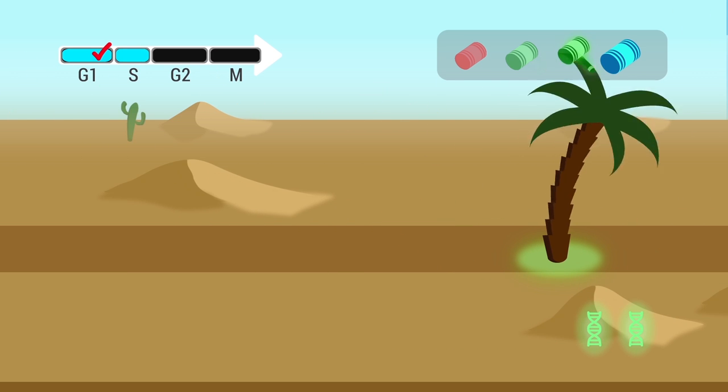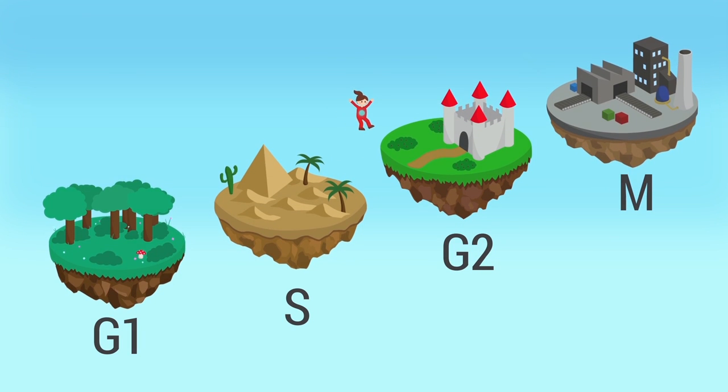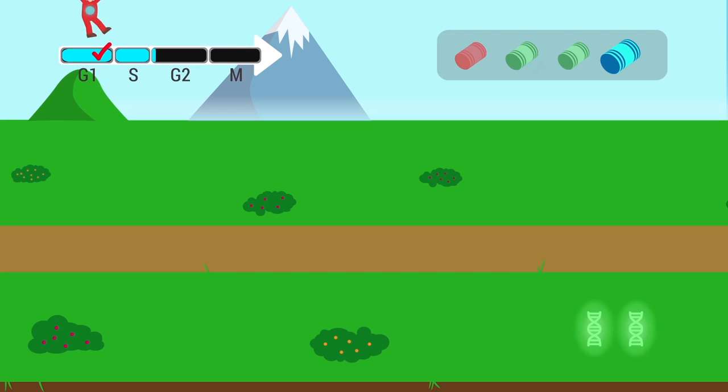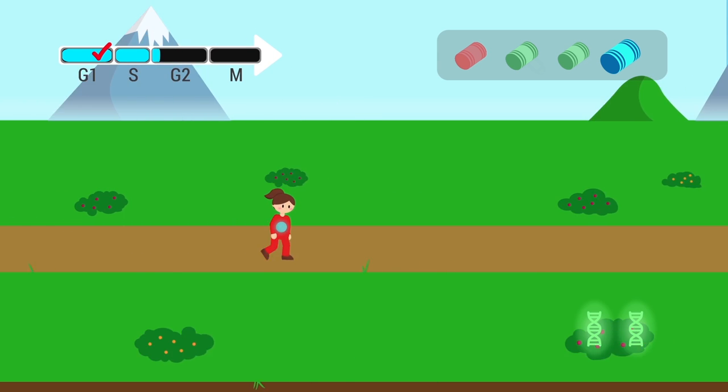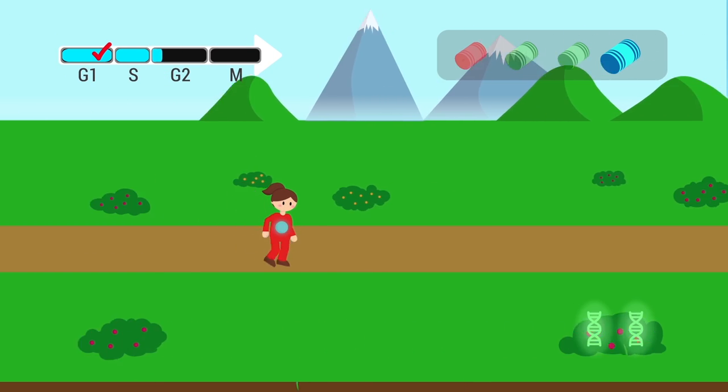Once the DNA has been replicated, the cell enters a third phase, G2 or growth 2. During this phase, the cell continues increasing in size and producing proteins in preparation for mitosis.